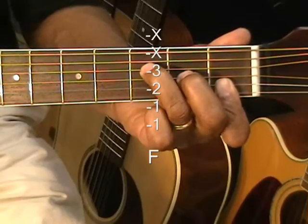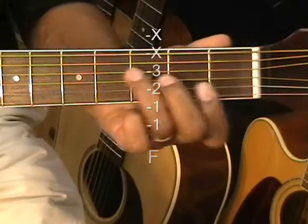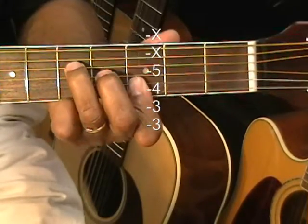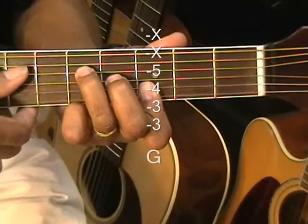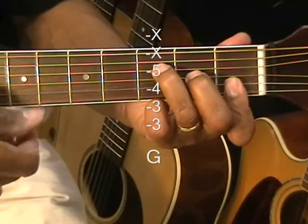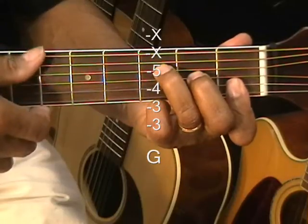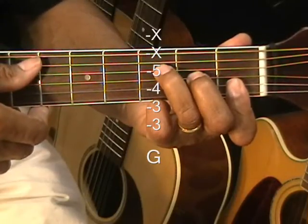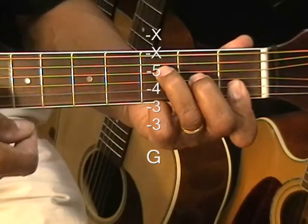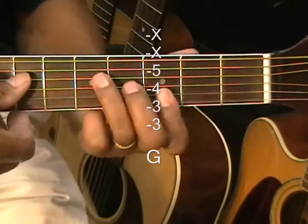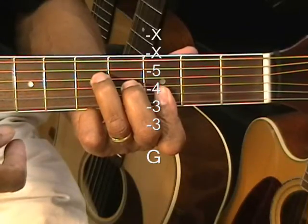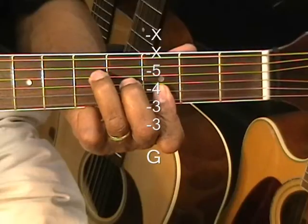We're going to raise that a whole step to the 3rd fret and we get a G major. Now we're strumming these chords from the D string to keep them pure. And we're not playing the E and the A strings. So we're strumming from the D string. That's our F. Raise it a whole step. We've got a G. And that's G major.